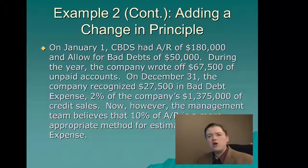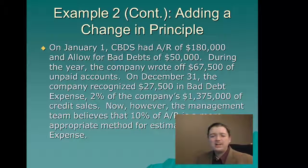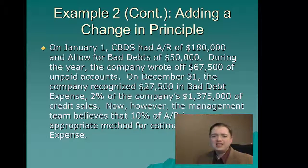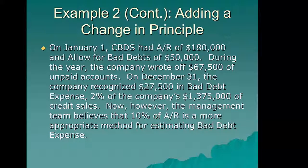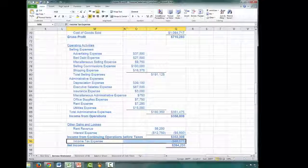But FASB carved a couple of exceptions out. They said there are some things where both the method and the numbers are all estimates, and they want you to treat those like a change in estimate. That makes it harder for investors to compare years, but from an accounting perspective it's much easier — going back and re-estimating everything for the last three years can be a challenging event. Of all the topics we'll cover, really the only thing formally treated as a change in principle would be moving inventory methods like LIFO to FIFO. In this case, we have a change in principle that is treated like a change in estimate, so we'll show how it appears on the income statement.